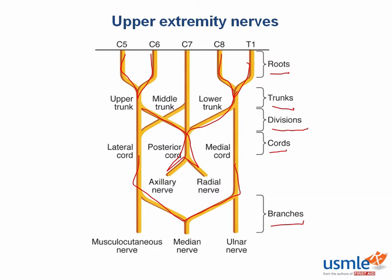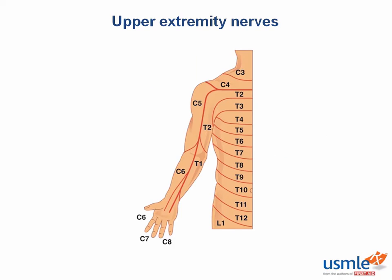You can remember the order of these levels with the acronym Randy Travis Drinks Cold Beer. These next pictures are high-yield images of the major nerve branches and associated dermatomes for the upper extremity, including the hand. It's worth having a rough idea of where each dermatome lies, because many questions will describe certain paresthesias and patches of skin and require you to know what nerve is involved.